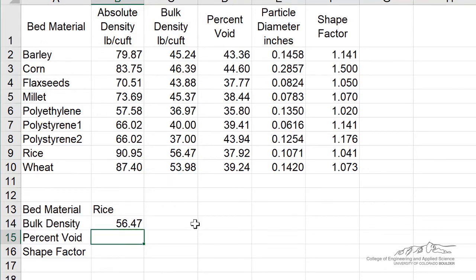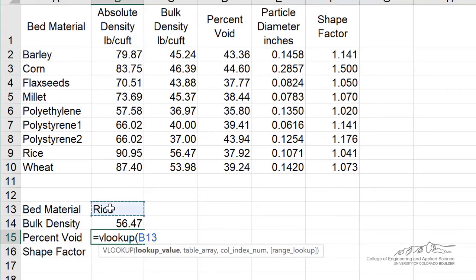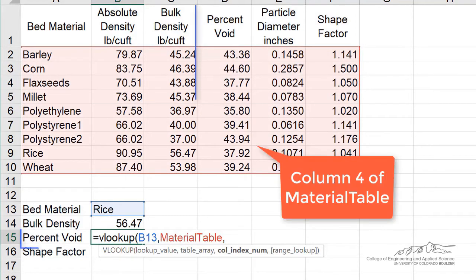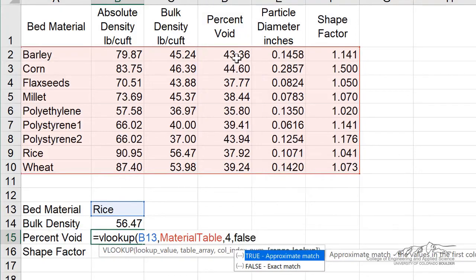We can do the same for the other two, so percent void, VLOOKUP of rice. I'm looking through my table array here. Now percent void is found in the fourth column of that table, and then for an exact match, I can do false.